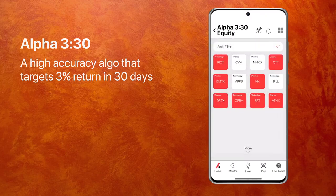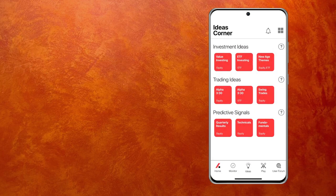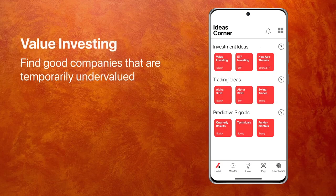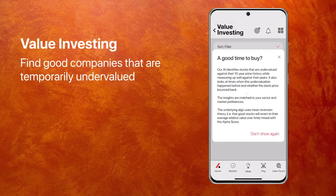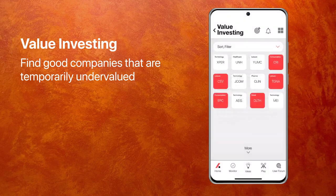So this is Alpha 330. Let me show you value investing. Value investing is really a longer term algo which looks for companies whose fundamentals have not changed, but the price has dropped. So on the theory that the price will bounce back — the mean reversion theory — let's see how it works.